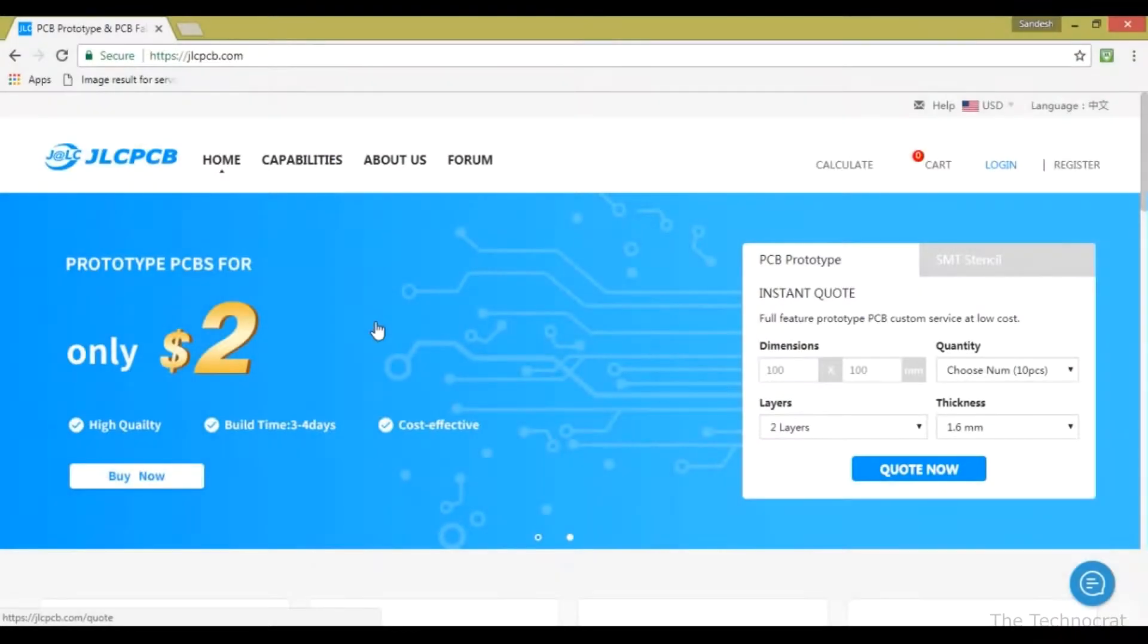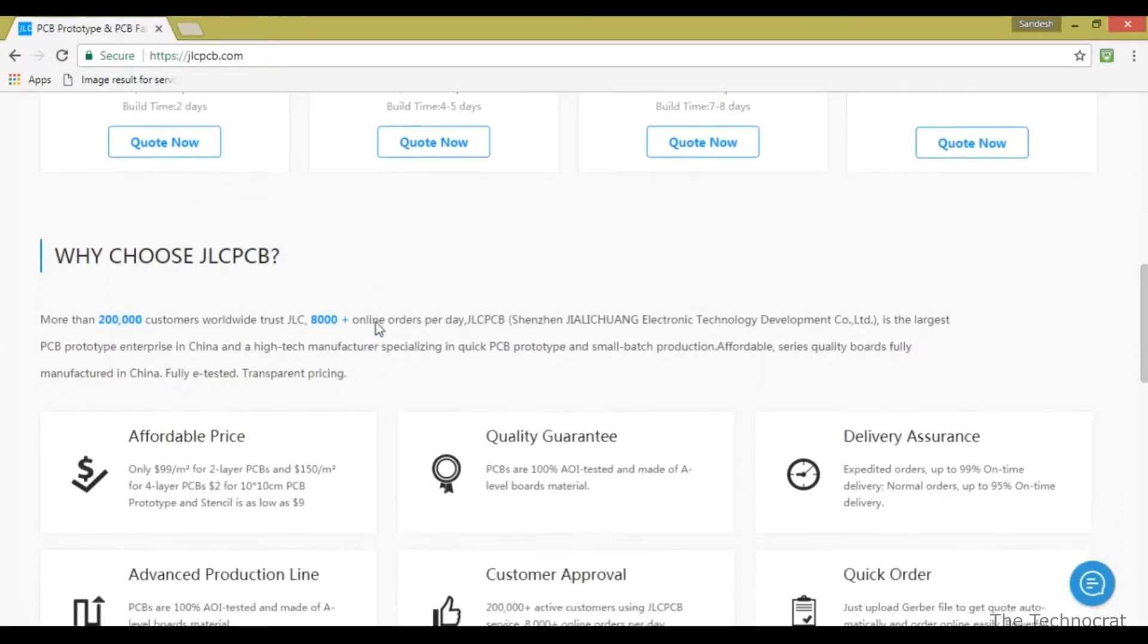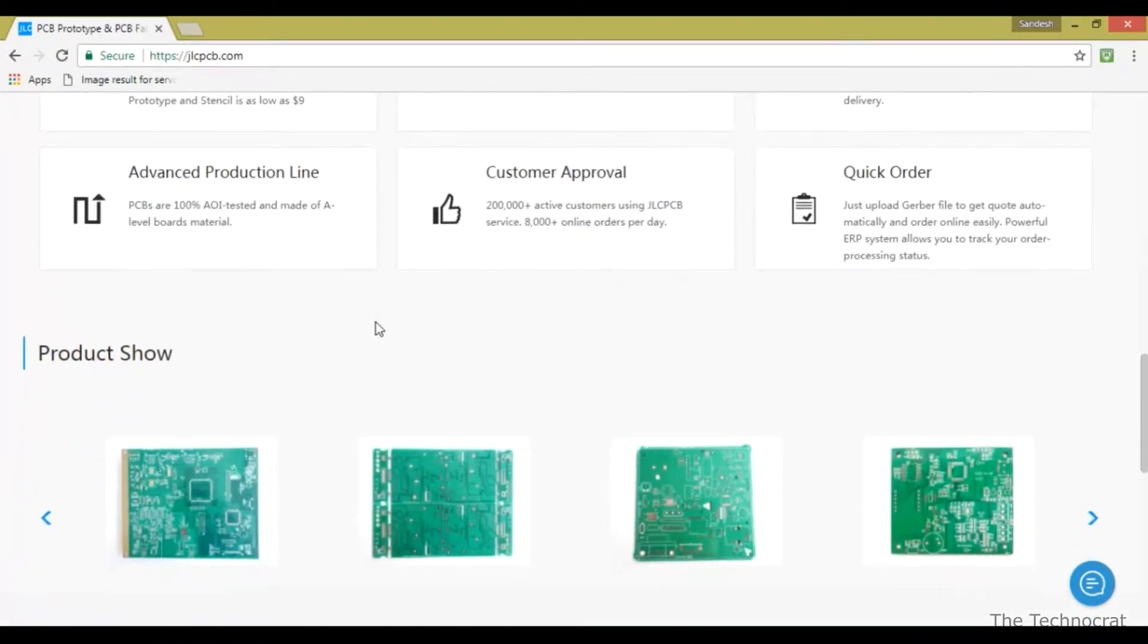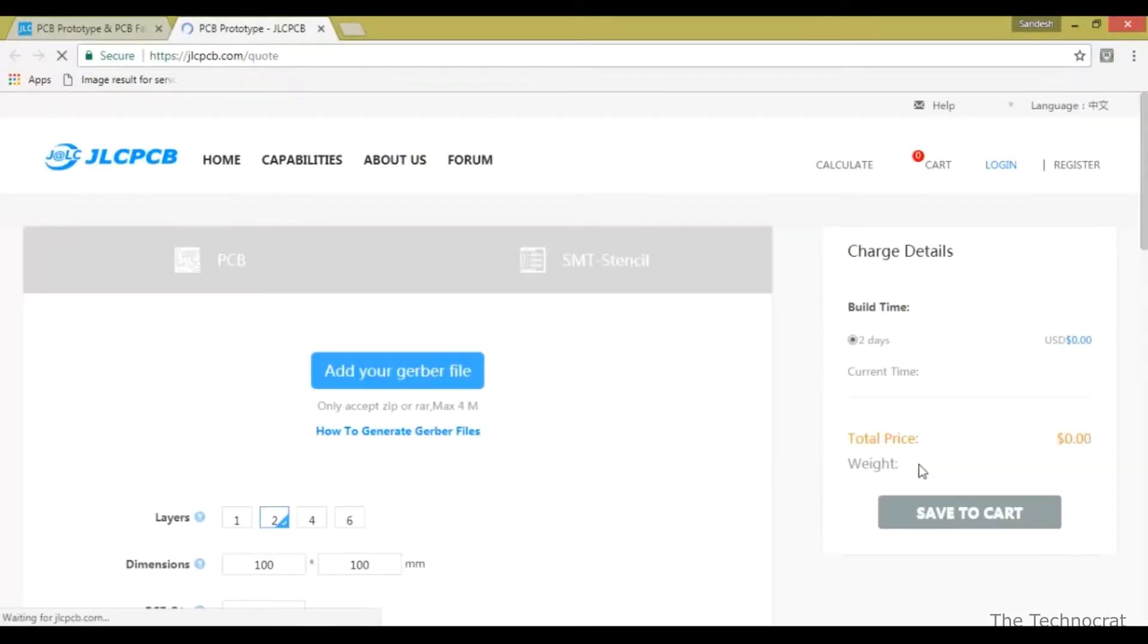This video is sponsored by JLCPCB.com. Order very high quality PCBs for only $2 to make your project look more professional. Even get free shipping on your first order only at JLCPCB.com.